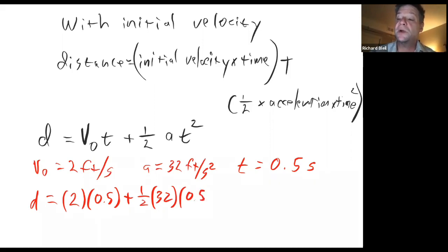But don't forget, we have to square the time. Then two times one-half gives us one foot. 32 times 0.5 squared times one-half gives us four feet. The well now is five feet deep.